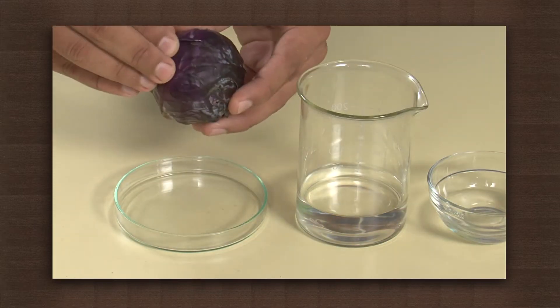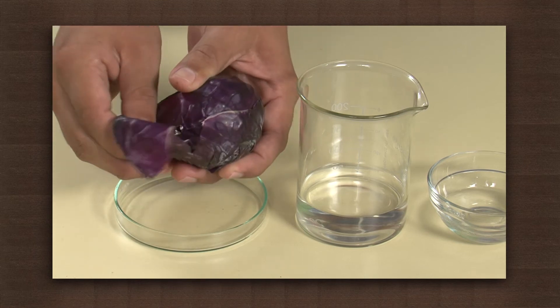To get the pigment out of the red cabbage, peel it and keep it in methanol for some time.